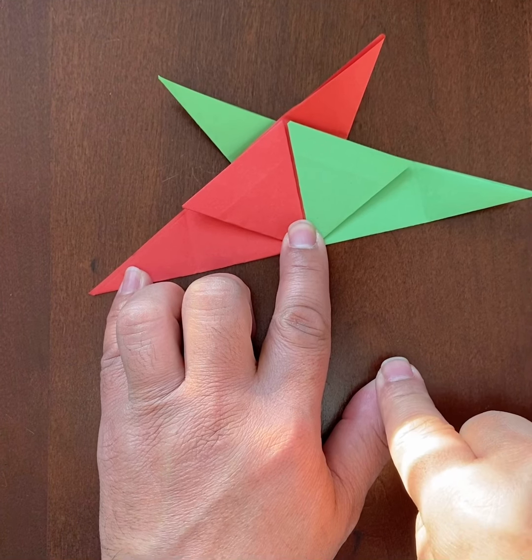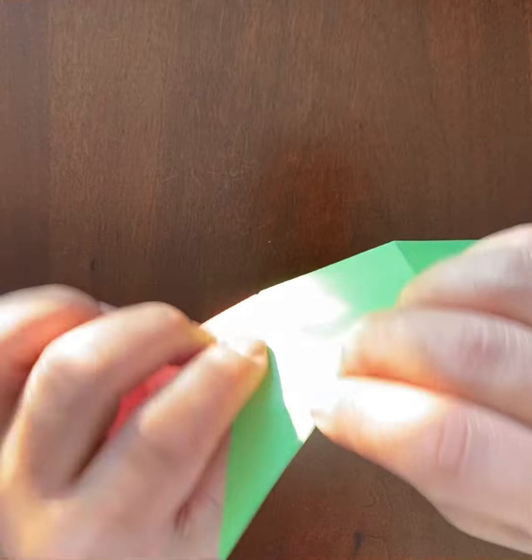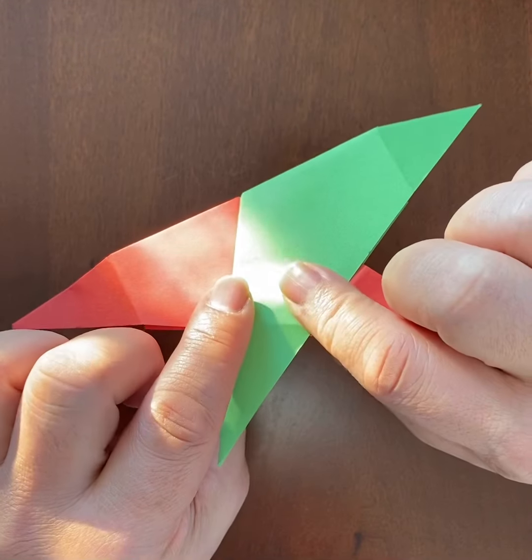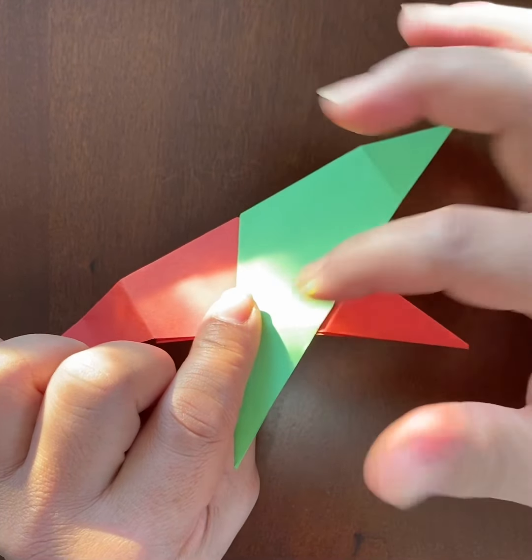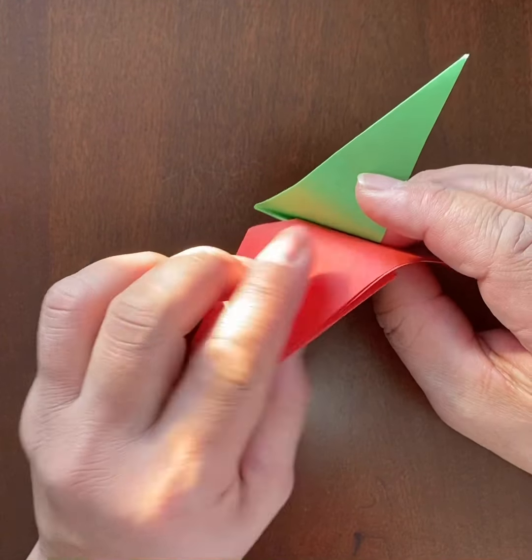That's what I want. Okay, so I'm going to go ahead and keep it so that it's the green on the outside that is on top of the red. The red will be underneath.